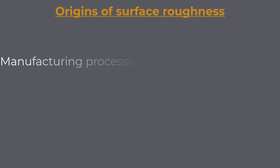Origins of surface roughness: Manufacturing processes. Almost every manufacturing process, whether it's machining, casting, forging, or additive manufacturing, introduces some level of surface roughness. For instance, milling might leave behind tool marks, while casting could result in slight granular irregularities.